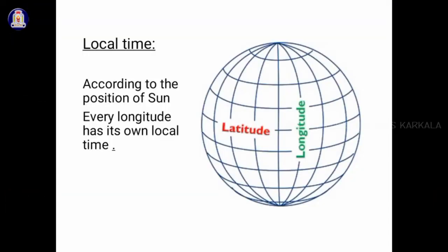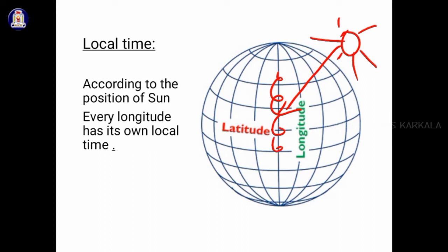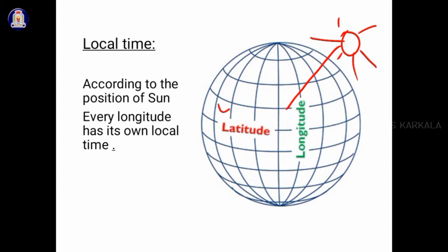The time according to the longitude of a place, or according to the position of the sun at that place, is known as local time. When the sun is shining vertically over a longitude, it is 12 noon at that place. All places situated on the same meridian have the same local time. The time may differ in other places, so every longitude has its own local time.